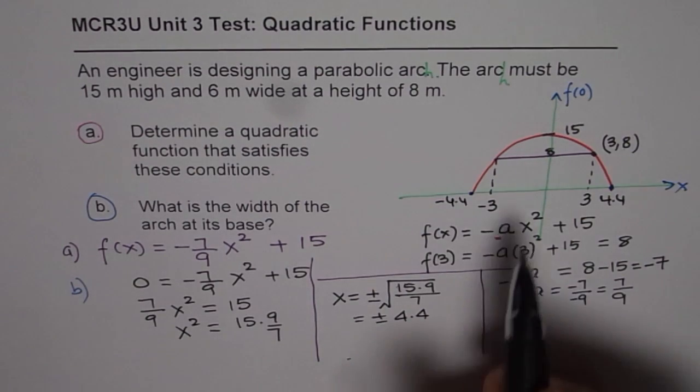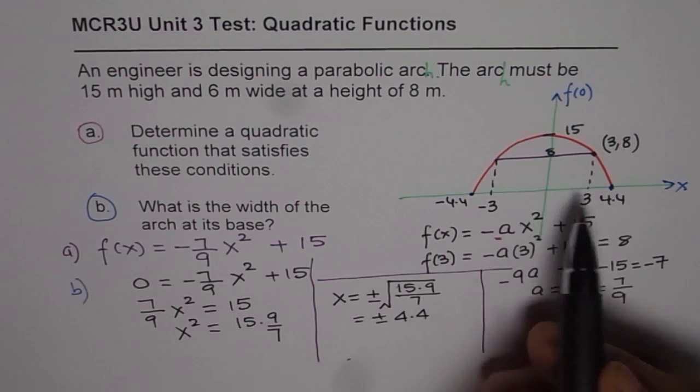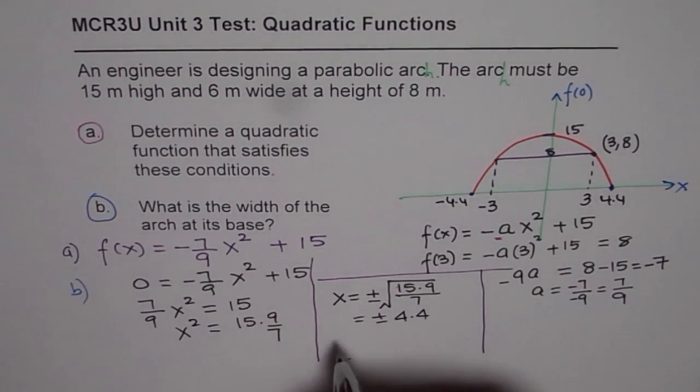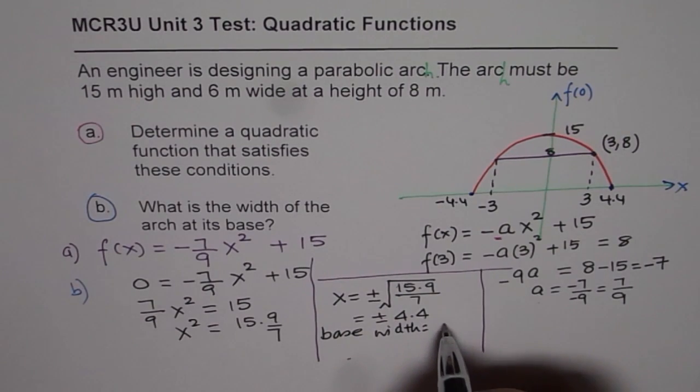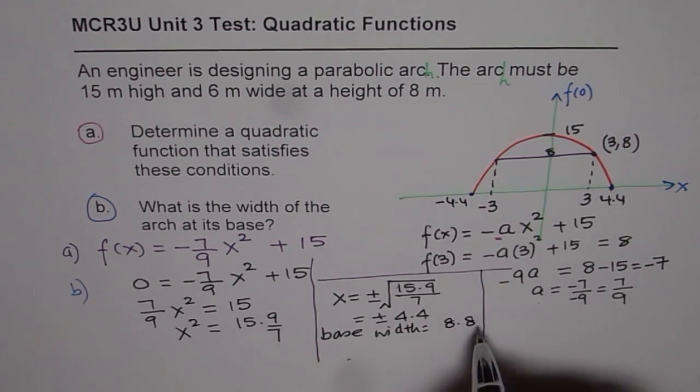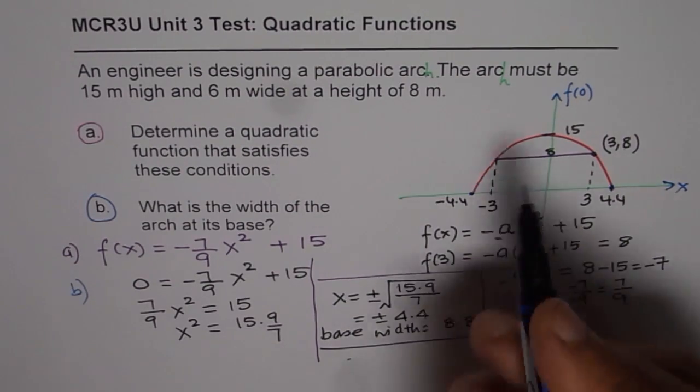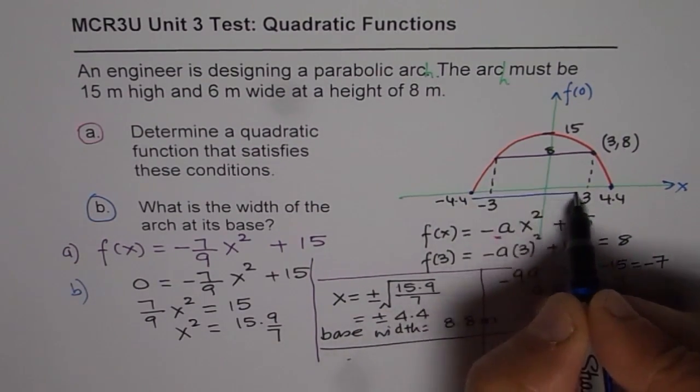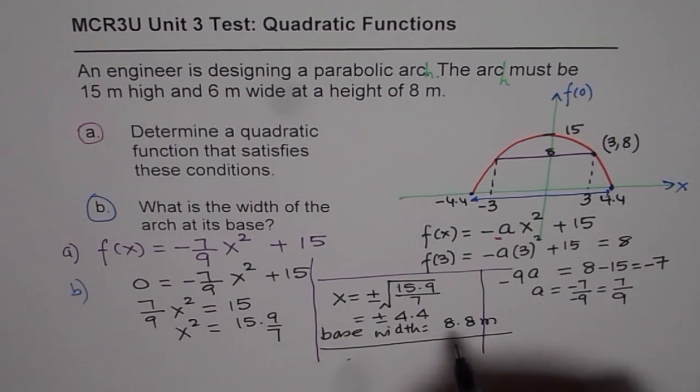So how much is the width? Width is twice 4.4, right? 4.4 on either side. So we can see base width is 2 × 4.4, which is 8.8, and the units are in meters. So that is how we can write down our answer. So the width is twice 4.4, and 8.8 is the width at the base.